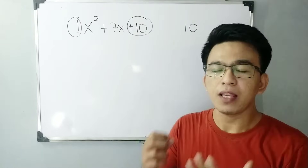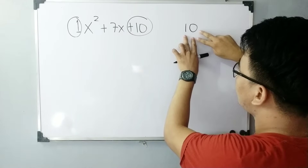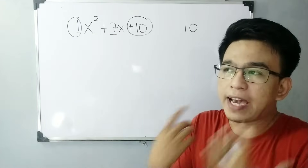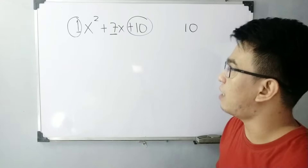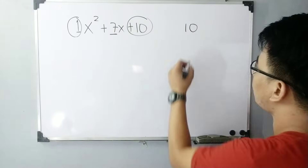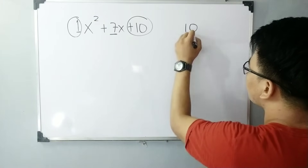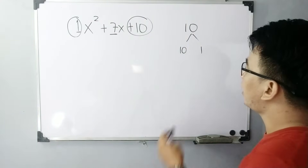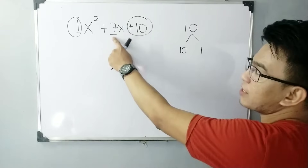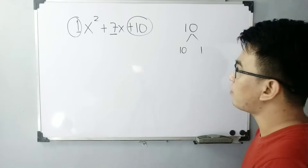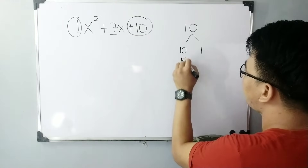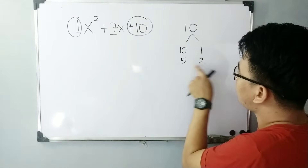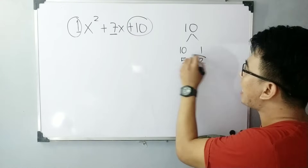Ang gagawin natin ngayon is we will think of the factors of 10 that can give us the sum of 7. Again, we will find factors of 10 that will give us the sum of 7. So what are the factors of 10? We can list down 10 and 1 because 10 times 1 is 10, and when we add them the answer is 11 — so it's not 7. So we will try another pair of factors. Let's have 5 and 2. 5 times 2 is 10 and 5 plus 2 is 7. So ito yung kailangan natin na factors.